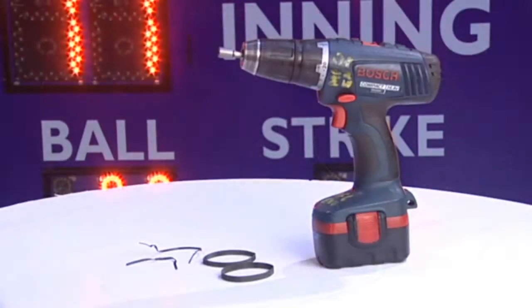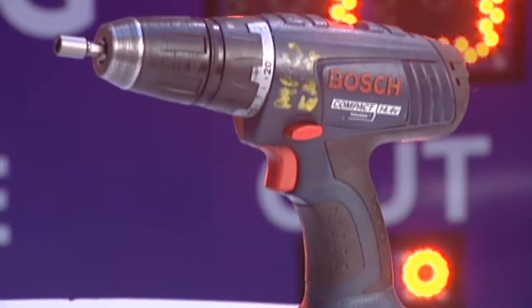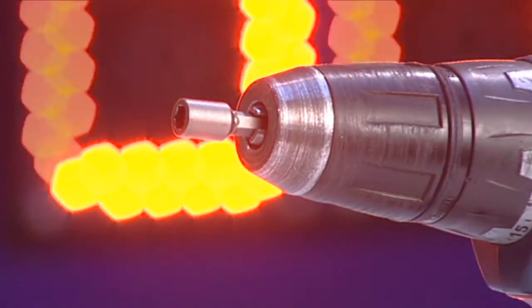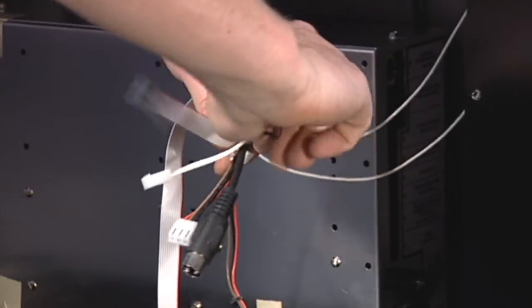The tools you will need to replace a digit on the scoreboard are a cordless drill, a quarter-inch nut driver bit for your drill, and a few twist ties or rubber bands to bundle the cables and prevent them from falling into the cabinet.